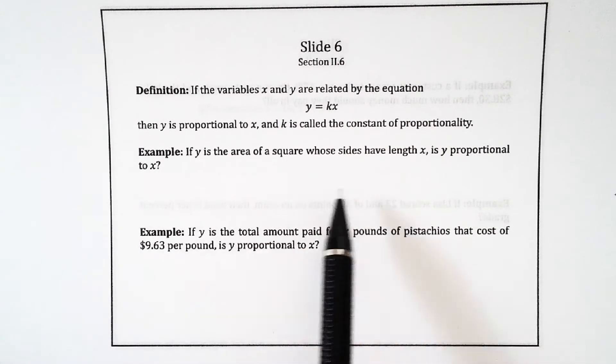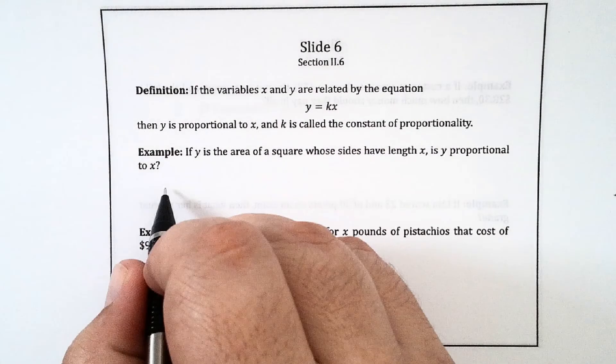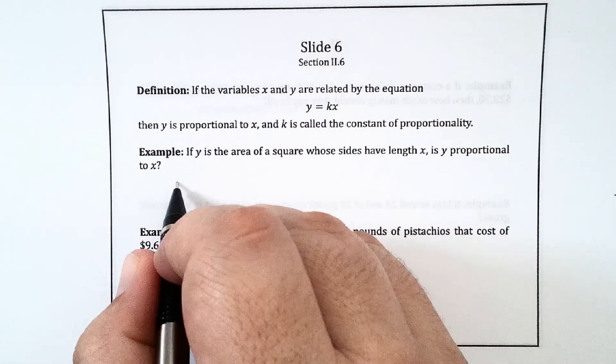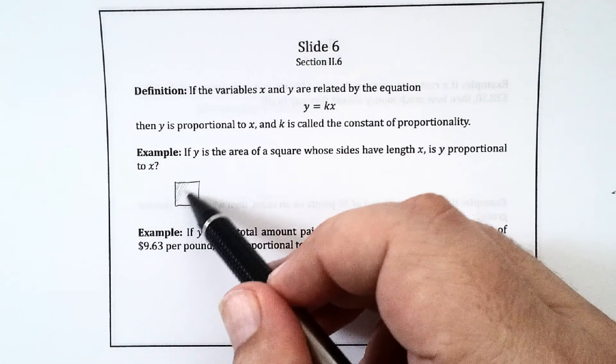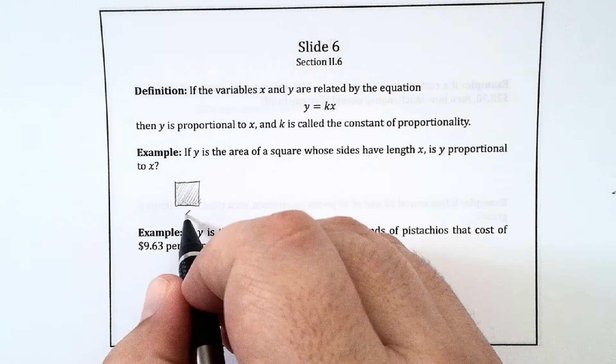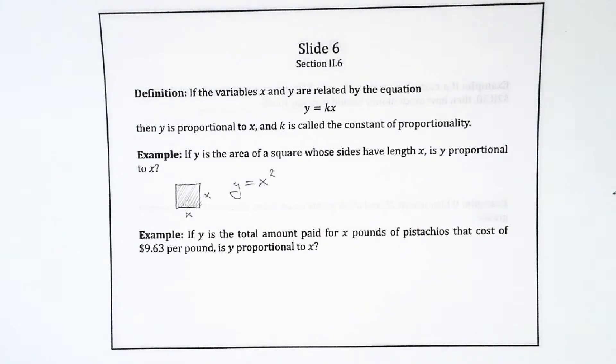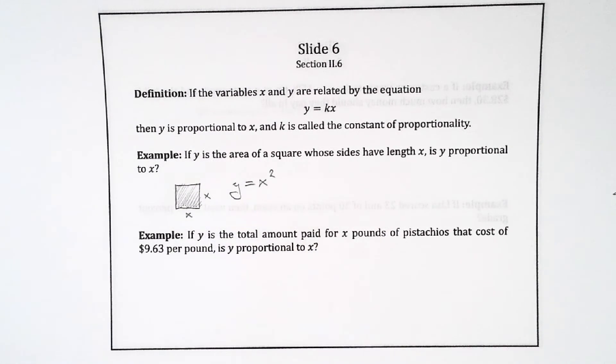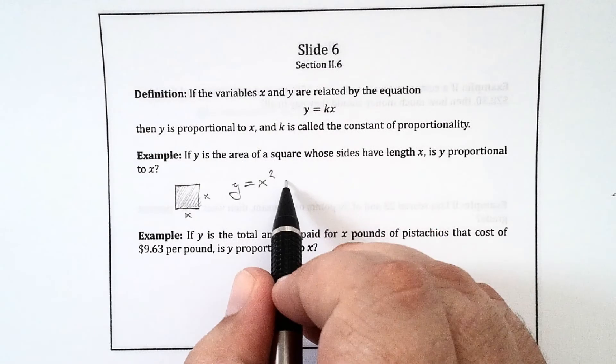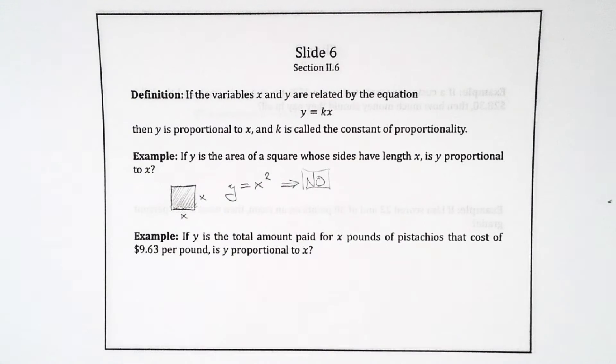So let's look at a couple examples. If y is the area of a square whose sides have length x, is y proportional to x? Well, the answer here is no. Because the area y is equal to x times x, or x squared. So this is not y equals x times a constant. So the answer then is no, just because of that form of that equation.